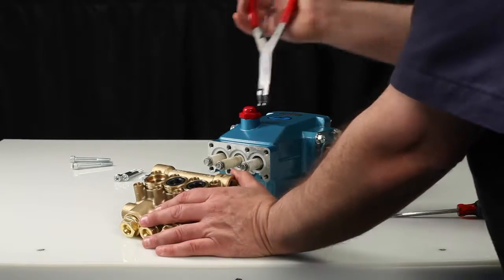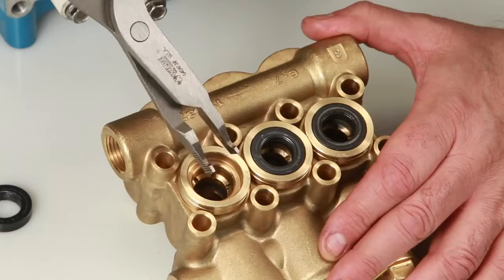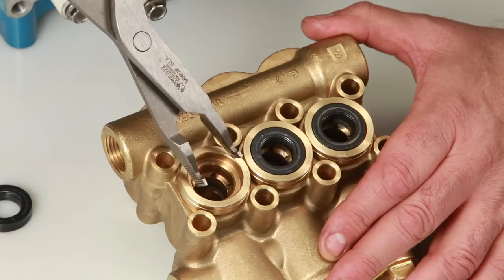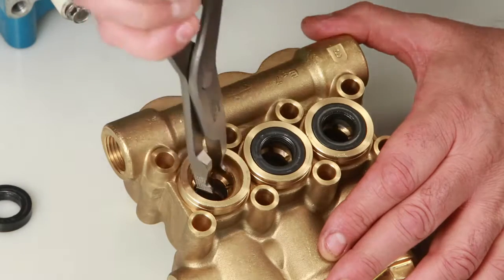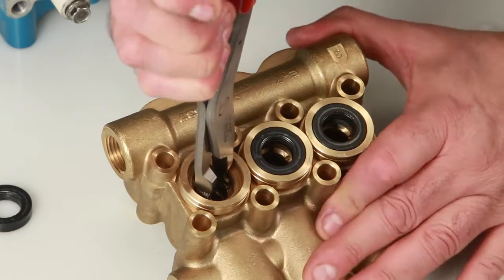Remove the seal case using reverse pliers. Be sure to avoid the first step of the seal case where the low pressure seal lies. Reach into the second step and twist as you pull away from the manifold.